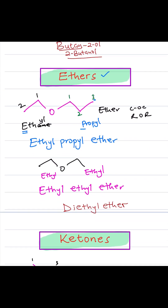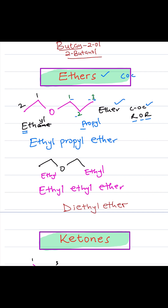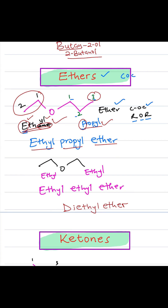The next functional group is ethers. Ethers contain a carbon-oxygen-carbon bond — an alkyl group-oxygen-alkyl group — and that's called an ether. In this example, you have an alkyl group with 2 carbons on the left, so that's ethyl, and another alkyl group with 3 carbons on the right, so that's propyl. Comparing E for ethyl and P for propyl alphabetically, E comes before P, so the name becomes ethyl propyl ether.